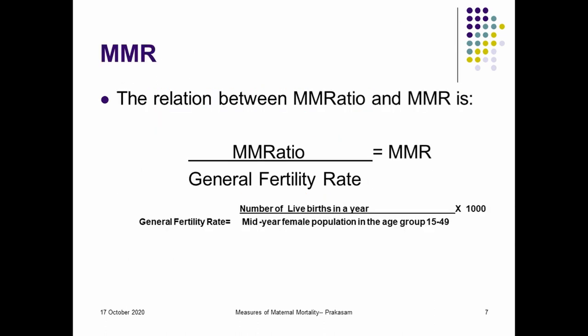The relation between the maternal mortality ratio and maternal mortality rate is also established. The maternal mortality ratio divided by the general fertility rate is equal to the maternal mortality rate. General fertility rate is the number of live births in a year divided by the mid-year female population in the age group 15 to 49, multiplied by 1000. This establishes the relation between maternal mortality and fertility.